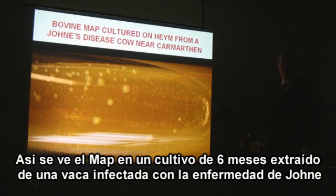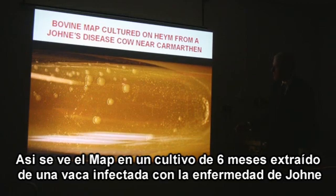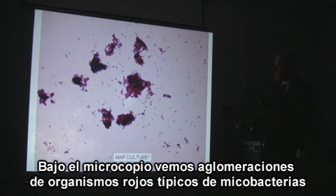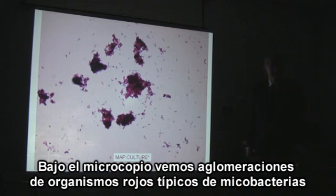This is what MAP looks like, cultured from the feces of an infected cow. This culture has taken six months. Under the microscope, we see clumps — groups of organisms — and they are all staining dark red, typical of mycobacteria.